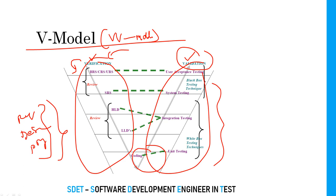Once the software is ready, testing starts on the software itself — unit testing, integration testing, system testing, and user acceptance testing — all under validation. Validation checks whether the already-developed software is working according to customer requirements or not. Verification checks whether we are following the process correctly. Validation focuses on checking whether the software meets customer requirements once it is ready.